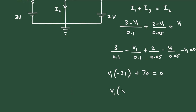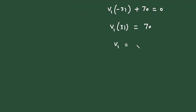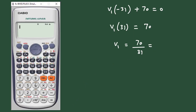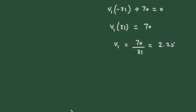So V1 times 31 equals 70. Therefore V1 equals 70 divided by 31, which is 2.258 volts. So V1 is equal to 2.258 V.